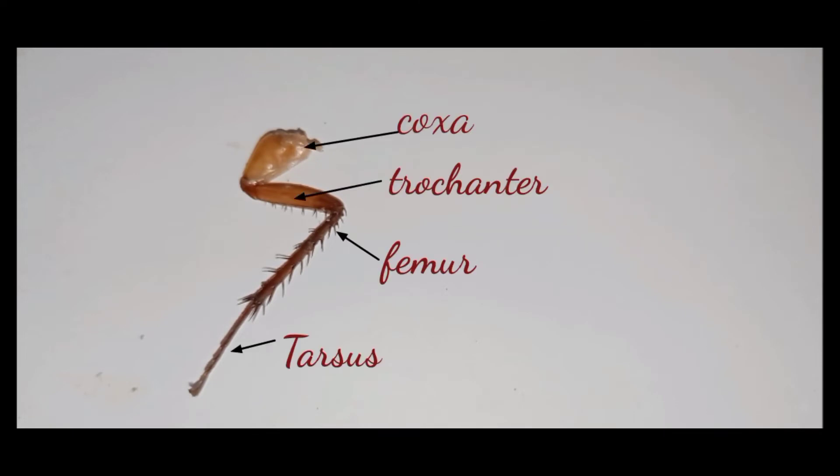There we can see the coxa, which is the one that attaches the leg to the thorax. And the trochanter, that acts like a knee. And the tibia, or femur, that serves as the thigh or shin bones.